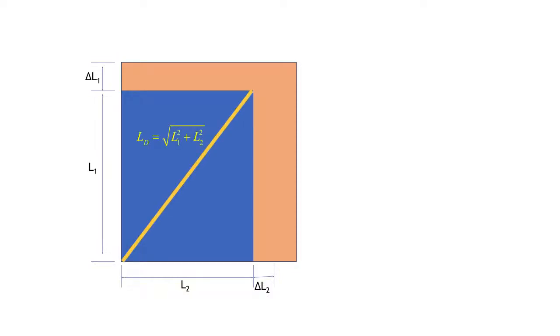We can start by considering what is the length of that diagonal. Before stretching, it's going to be, by Pythagoras, the square root of L1 squared plus L2 squared.